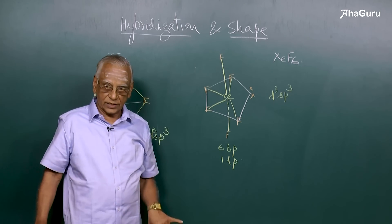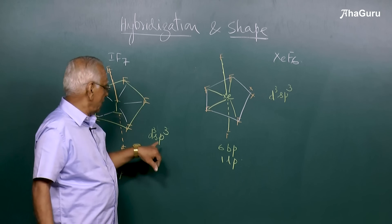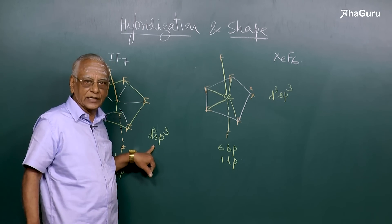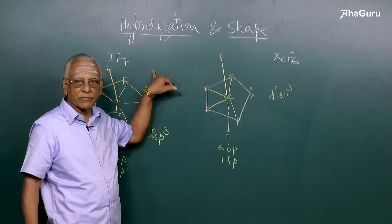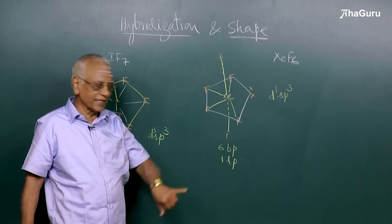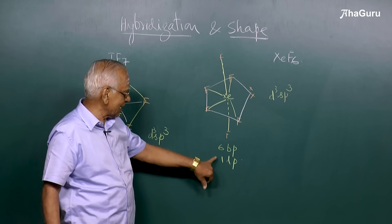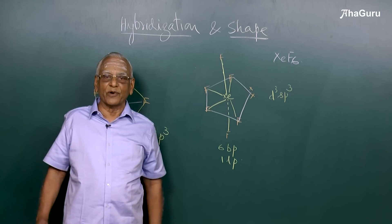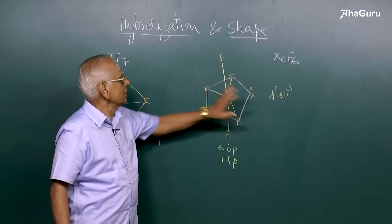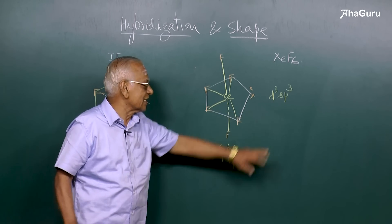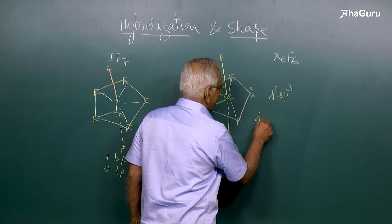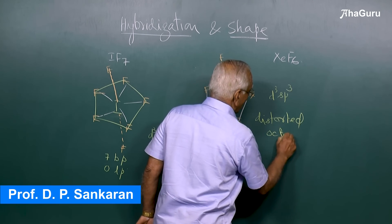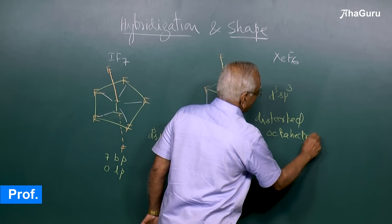To summarize: if a central atom uses only bond pairs with no lone pair, both the hybridization and shape are identical. If it has six bond pairs and one lone pair — as in xenon hexafluoride — the total electron pairs are still seven. The hybridization is d³sp³, but the shape is a distorted octahedron.